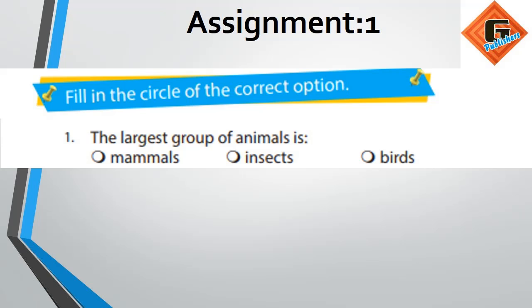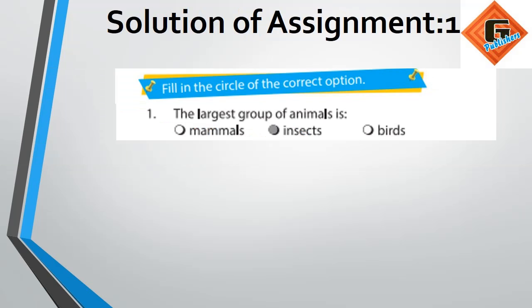Question: the largest group of animals is — first option is mammals, second option is insects, and third option is birds. And the answer is insects.